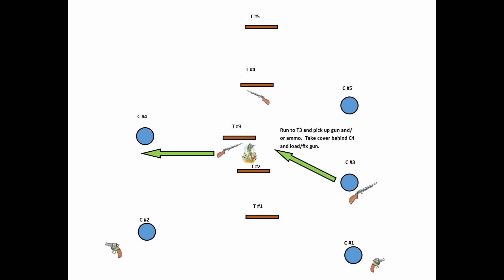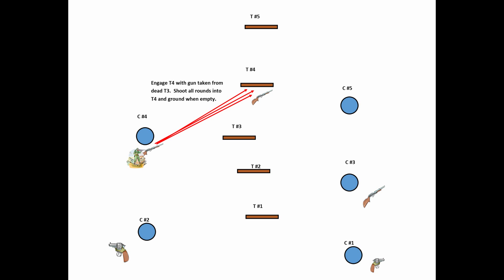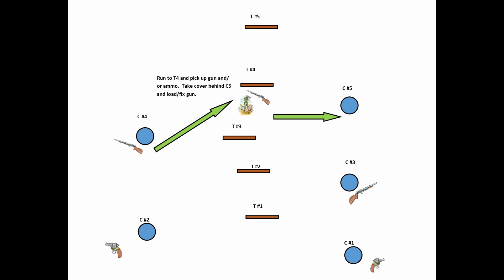This drill requires the following: five barrels or other forms of cover typically found at a range, five targets ideally with each wearing a t-shirt, five target stands, four different types of firearms must include one handgun and at least one AK.